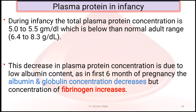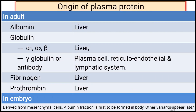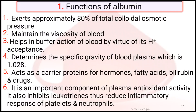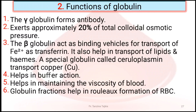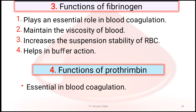In the first six months of pregnancy, albumin and globulin concentration decreases, but fibrinogen concentration increases. Functions of albumin: it creates 80% of total colloid osmotic pressure, maintains viscosity, helps in buffer action, determines specific gravity, and acts as a carrier. Globulin forms antibodies, contributes 20% of colloid osmotic pressure, and beta-globulin acts as a binding vehicle for transport of iron.